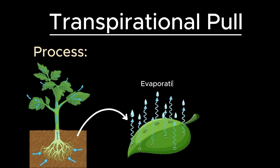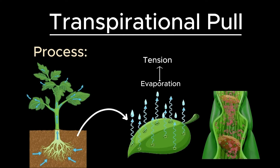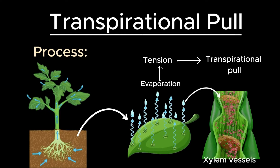As water evaporates from the leaf surfaces, it creates tension within the leaf and xylem tissues. This negative pressure, or tension, generated by the evaporation of water from the leaves creates a pulling force. This force is transmitted down through the water column in the xylem vessels, effectively pulling more water up from the roots to the leaves.